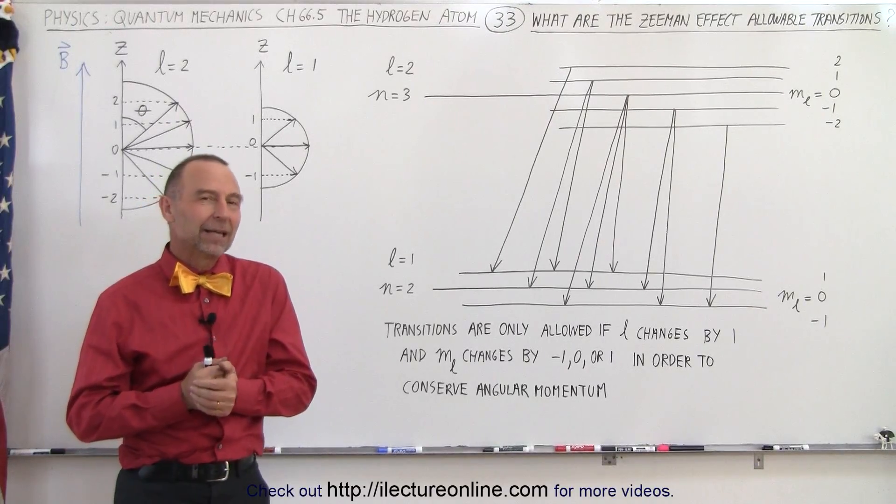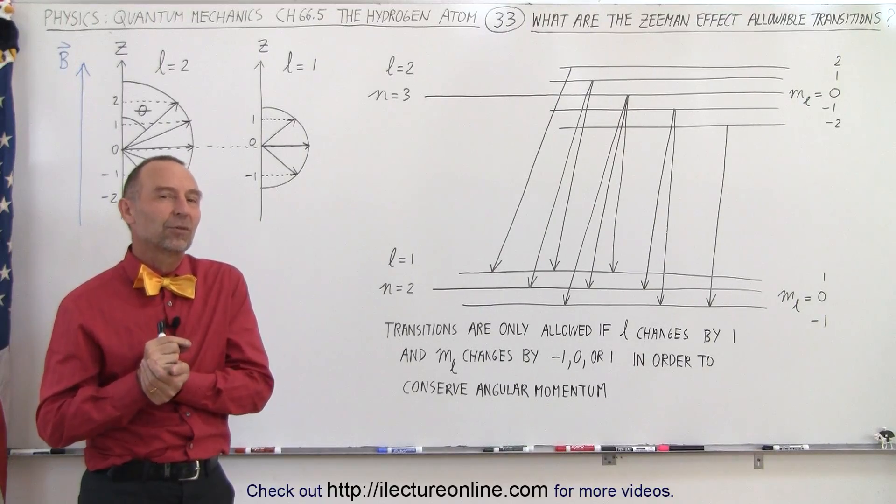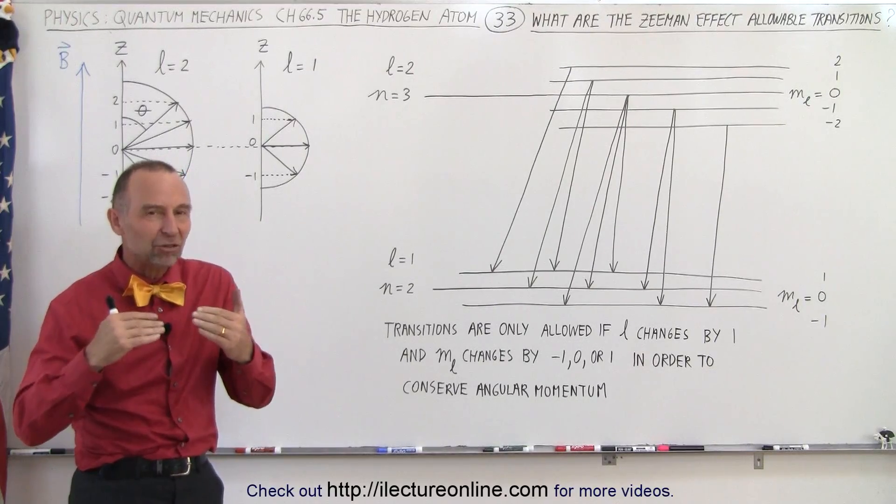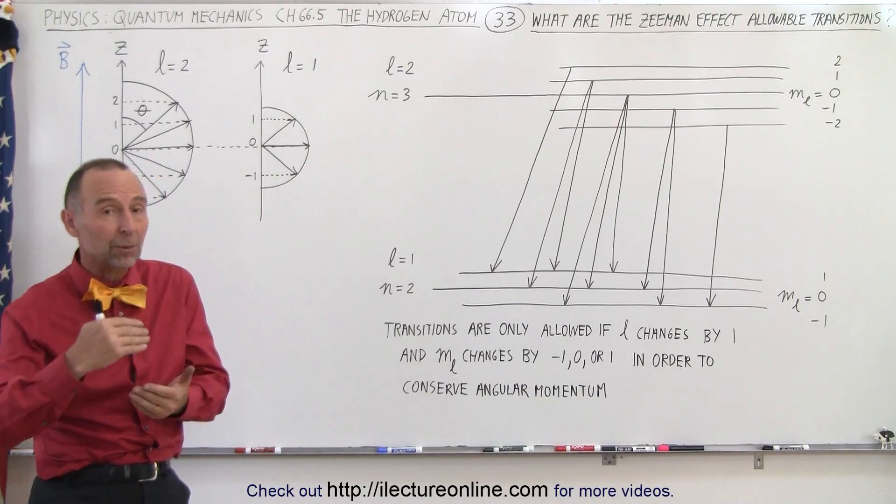Welcome to Electron Line. Now when we look at the Zeeman effect, there's one more thing we need to take into consideration. There are limitations on the transitions. There are allowable and non-allowable transitions.